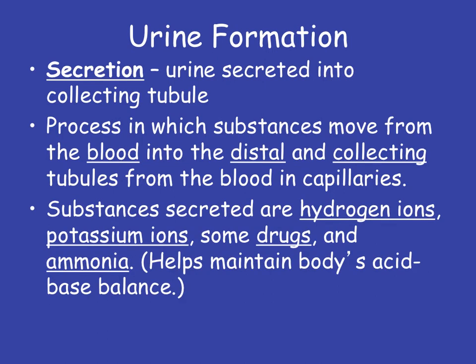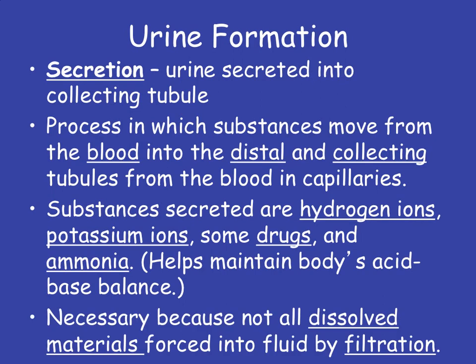This includes things like hydrogen ions — and if you remember from your chemistry, hydrogen ions dictate pH — potassium ions, certain drugs, and ammonia. The combination of these substances will differ based on your own body's acid-base balance, because that's what these secretion substances do: they help maintain it. This is a necessary step because not all of the dissolved materials are forced into the fluid drained into the Bowman's capsule by filtration.